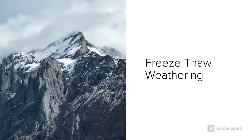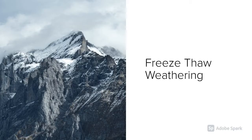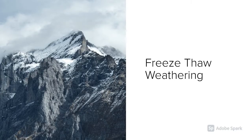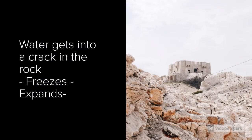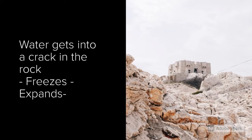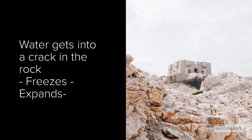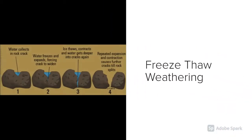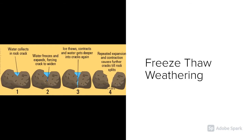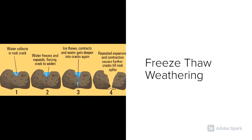Freeze-thaw weathering occurs usually in mountainous regions. It happens when water gets into a crack in the rock, freezes, and expands. Once the water expands, the rock cracks away and breaks in two. Often we call the bit that's cracked away scree.